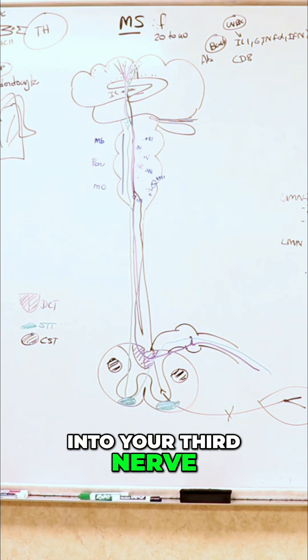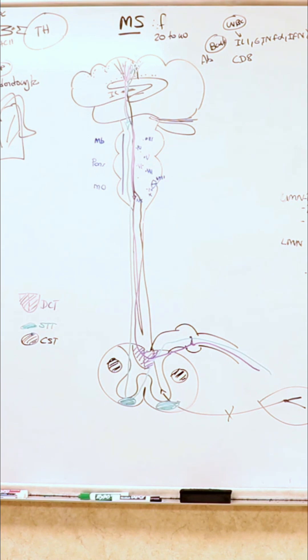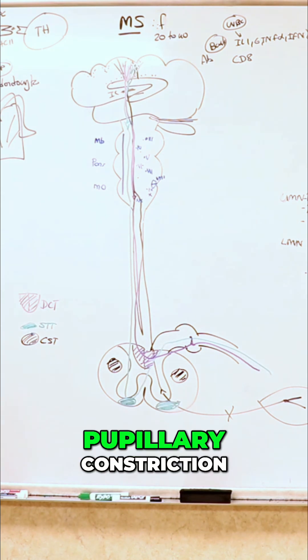It's going to go into your third nerve to an area which is going to be called your ciliary ganglion. It's going to go into ciliary ganglion, and what is this going to do to the eye both sides? It's going to cause pupillary constriction.